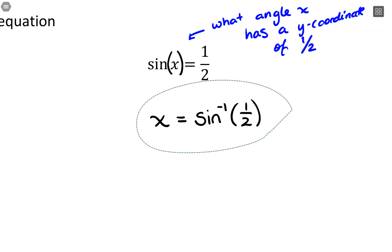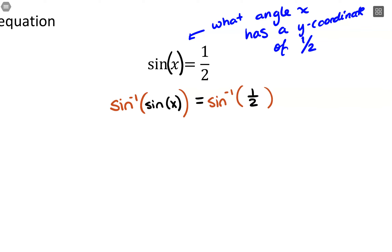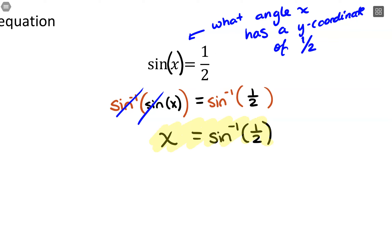Another way this is described is taking the inverse sine of both sides of the equation. We could write it as taking inverse sine of sine of x, equaling inverse sine of the other side as well. That property means inverse with its original function cancels out, leaving us with x equals inverse sine of 1/2. Basically, we want to get to this setup so that we're solving for x.